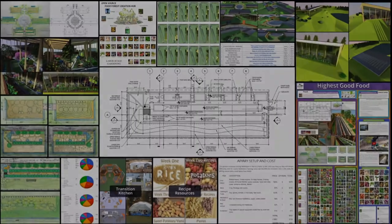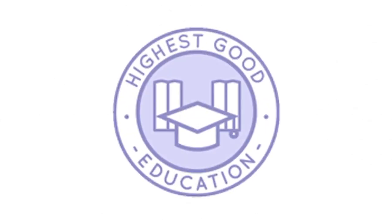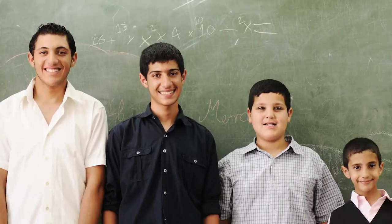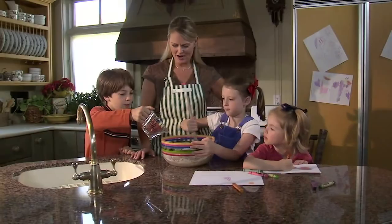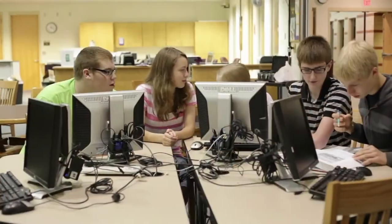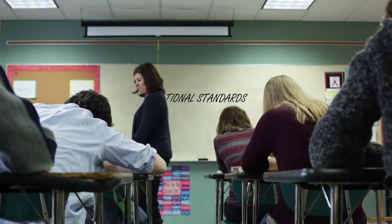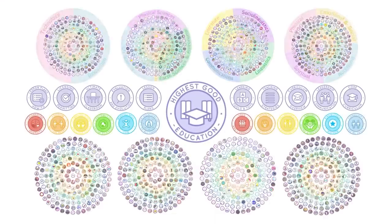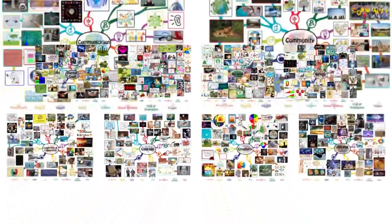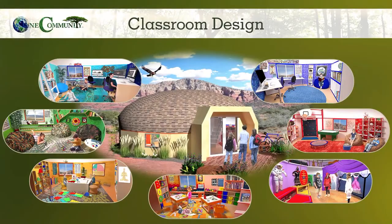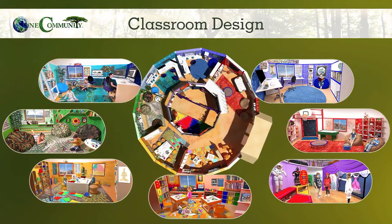The next component is highest good education. This component is complete and pretty much ready to launch once we're on the property. One Community's approach is designed for all age groups, adaptable to any schooling environment, inspiring and fun for all participants, includes national standards, all subjects, lesson plans, teaching strategies, learning strategies and tools, classroom design, and more.